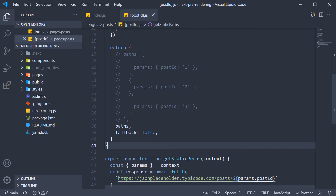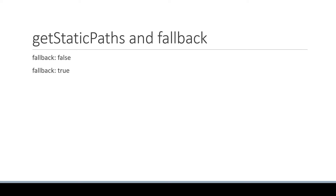Welcome back. Let's now take a look at the fallback key returned from getStaticParts. The first thing to note about the fallback key is that it is mandatory — that is the reason we had to include it two videos ago. The fallback key accepts three possible values: false, true, and blocking. When it comes to performance and user experience, understanding the behavior of static generation for each of these values is really important.